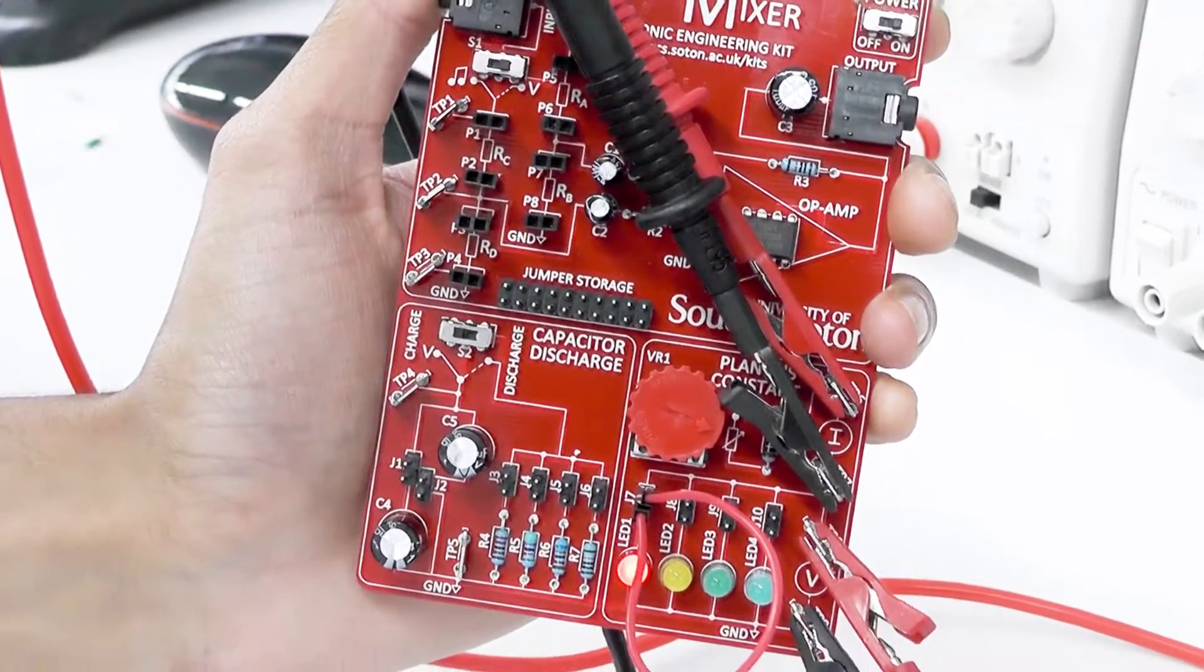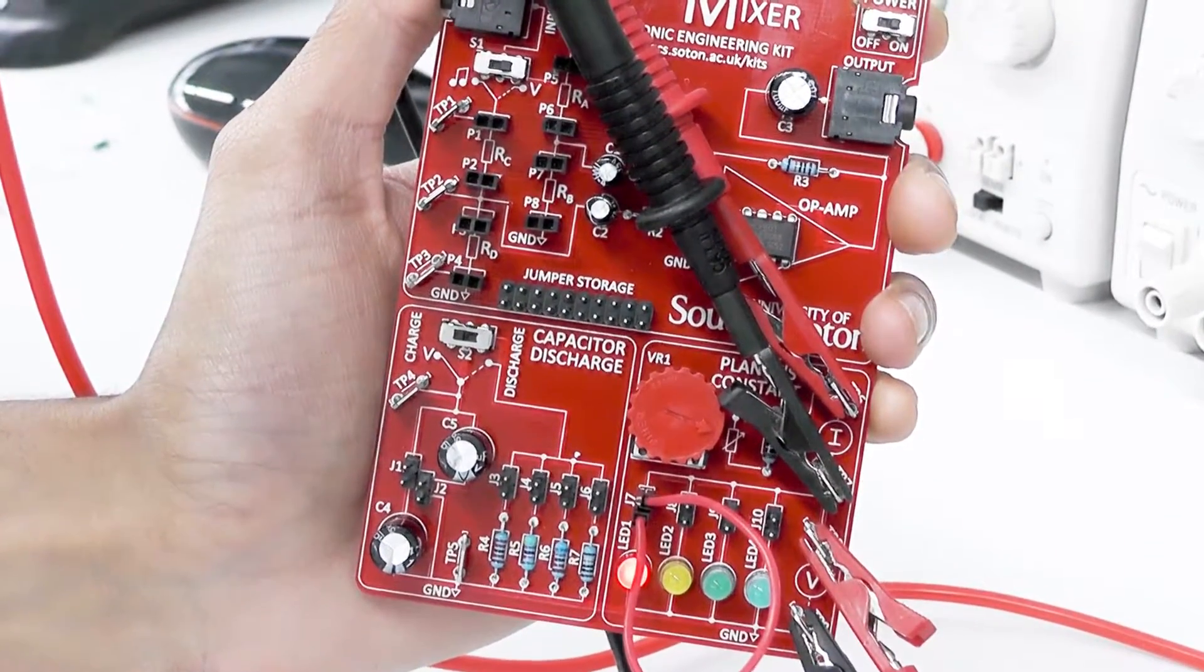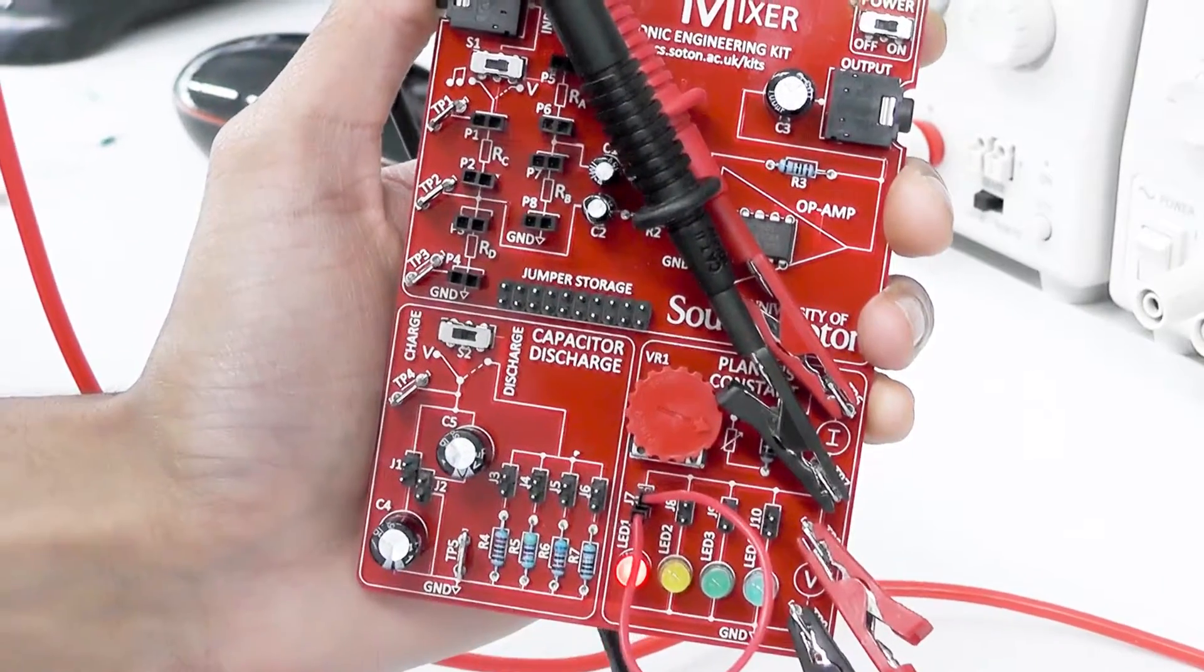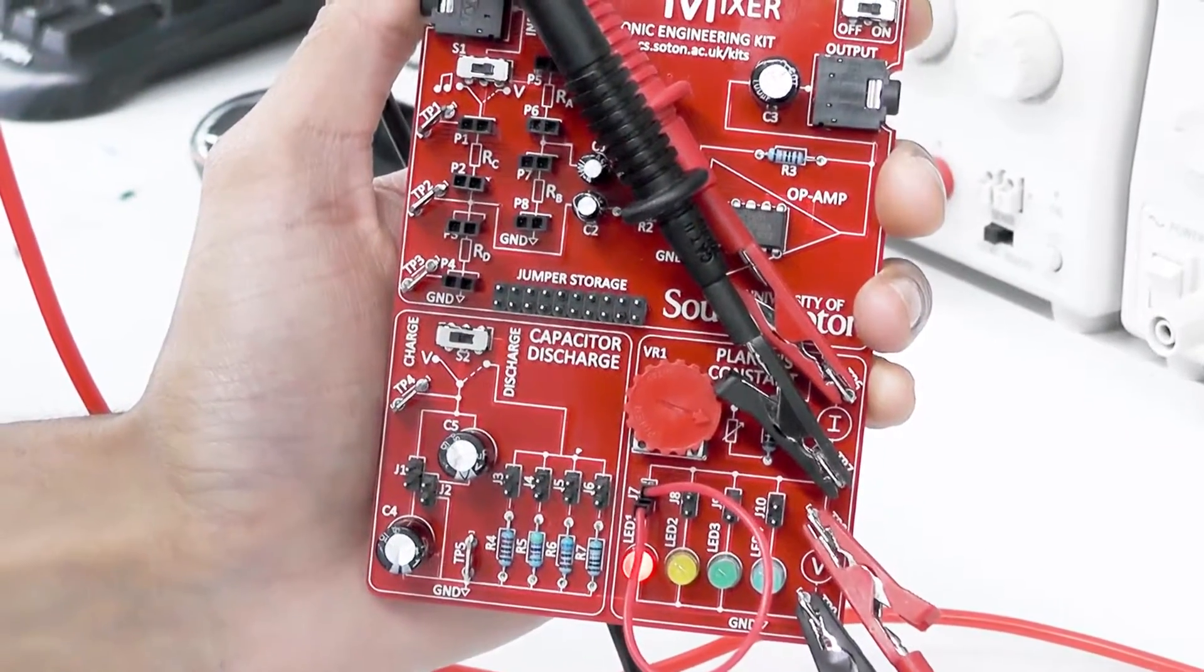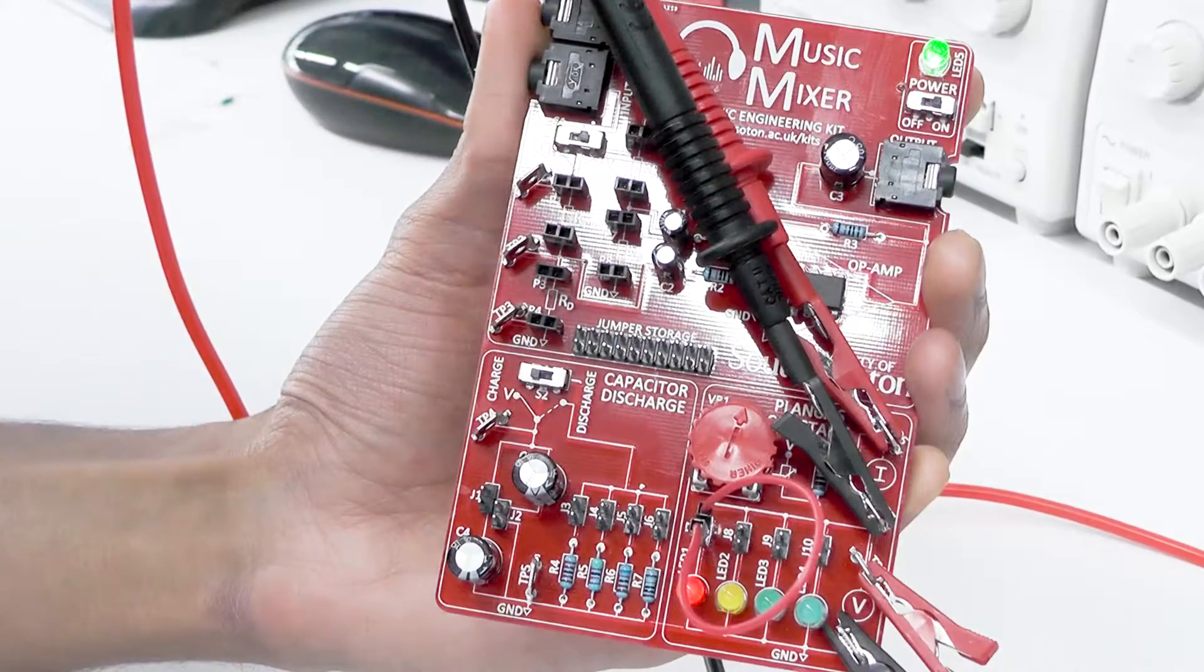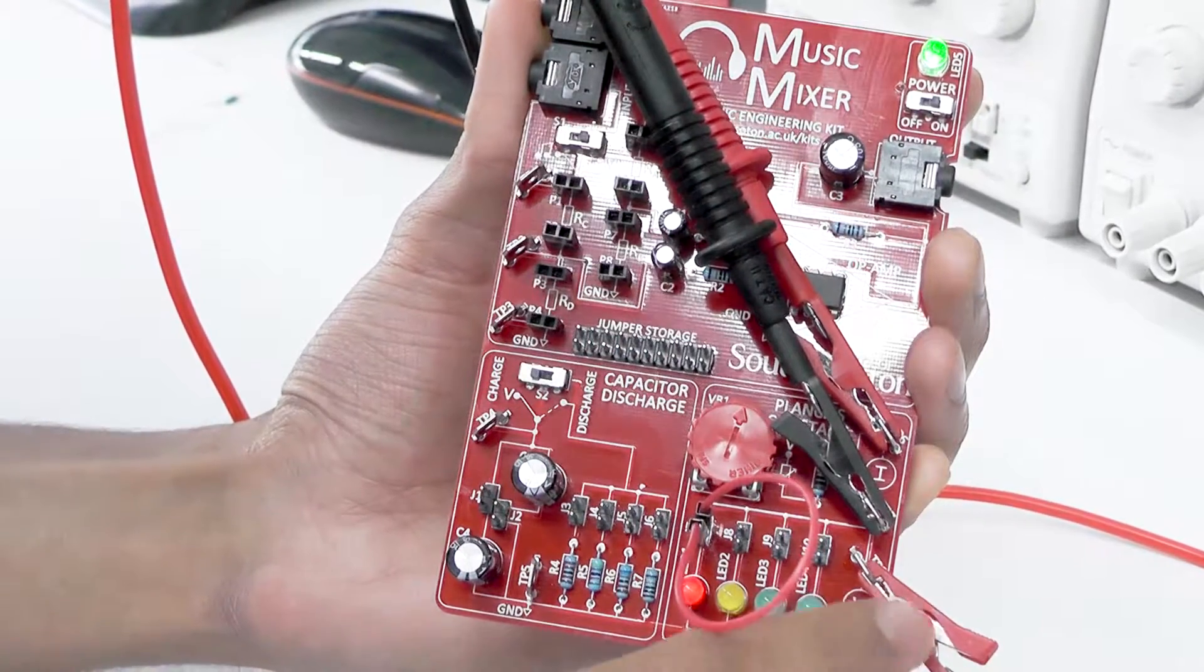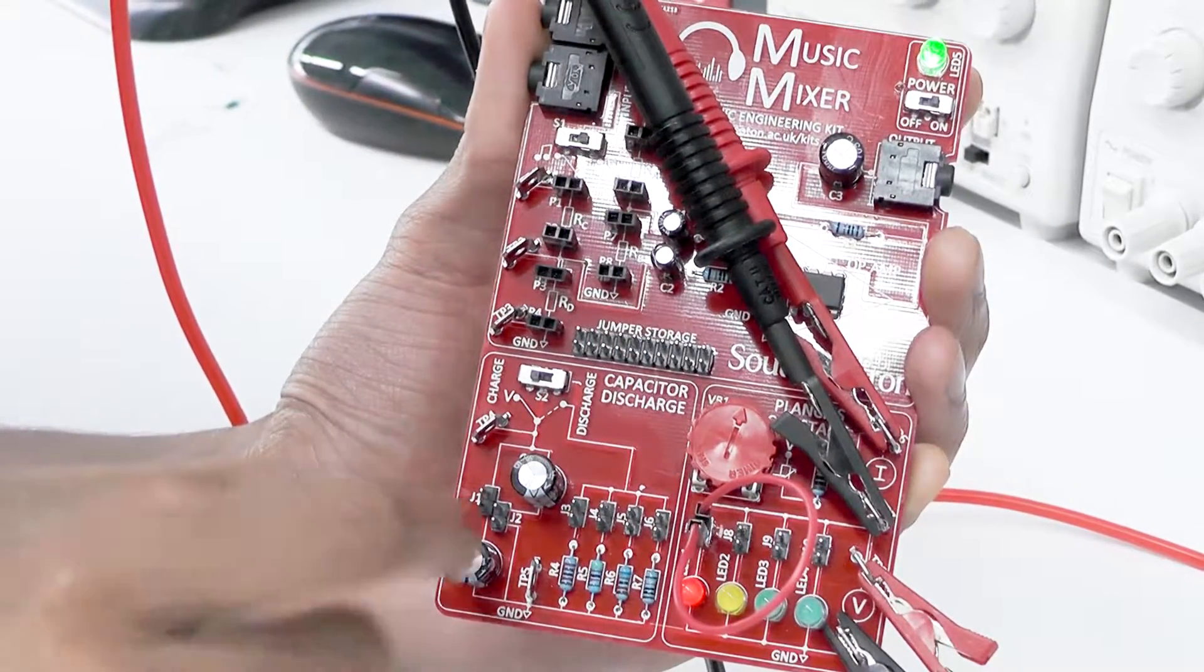This is what the circuit should look like when connected correctly. As you can see, the red LED is lit. Make sure to turn the power on. The voltmeter is connected in parallel across the LEDs and the ammeter in series here.